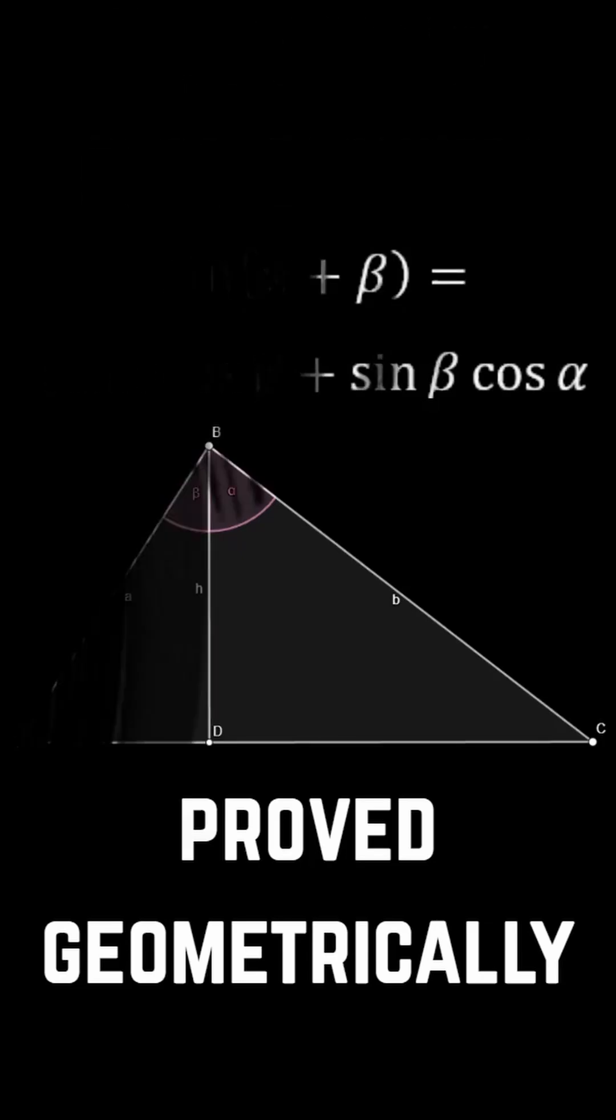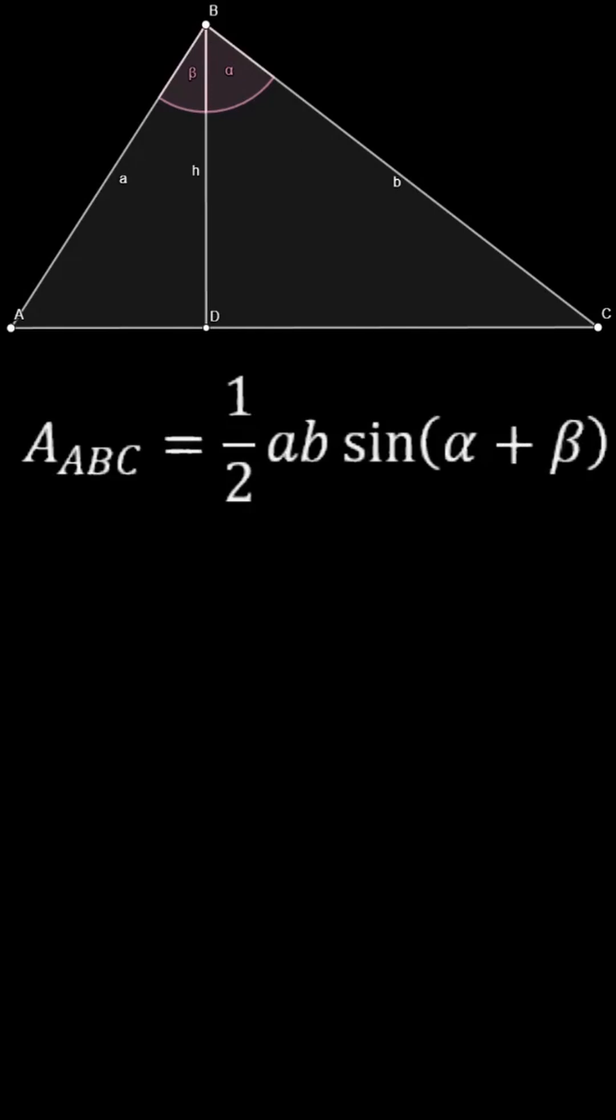Take a look at this triangle. Notice how its altitude, BD, splits the angle ABC into two angles, which we will call alpha and beta.